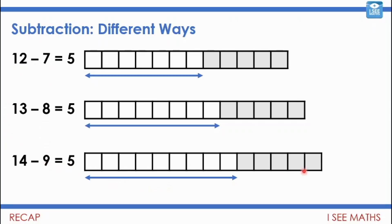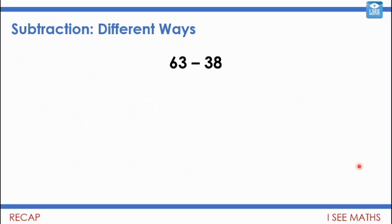So let's say I had 63 subtract 38. One thing I could do instead is just do 65 subtract 40 — the answer to those calculations will be the same. It's just easier to answer 65 subtract 40 than 63 subtract 38.